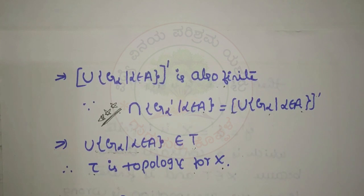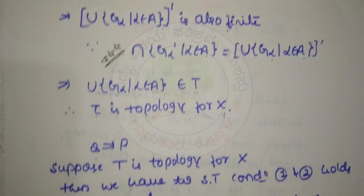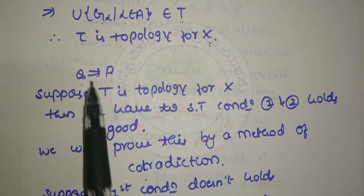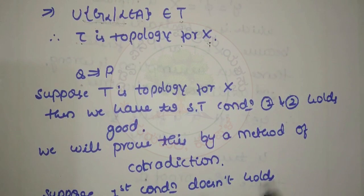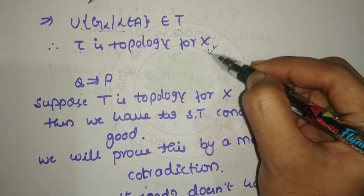So four conditions are satisfied, and T is a topology on X. This completes one way — P implies Q. Now we prove the other direction: Q implies P.